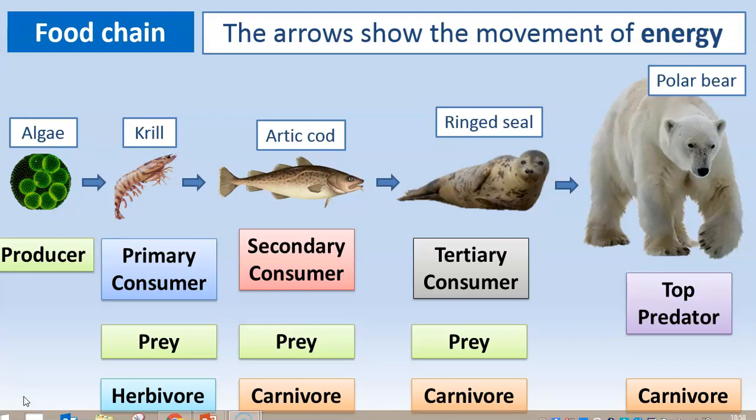The ring seal would be the prey of the polar bear. The arctic cod is the prey of the ring seal, in which case the ring seal is the predator. The predator is always the hunter; the prey is the hunted. Then we have herbivores — herbivores only eat plants. Carnivores eat animals only, so the arctic cod, ring seal, and polar bear are all carnivores.